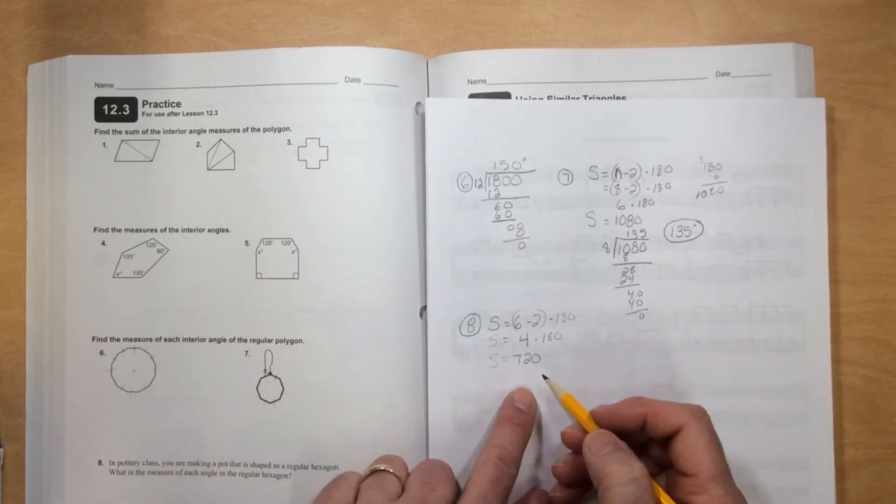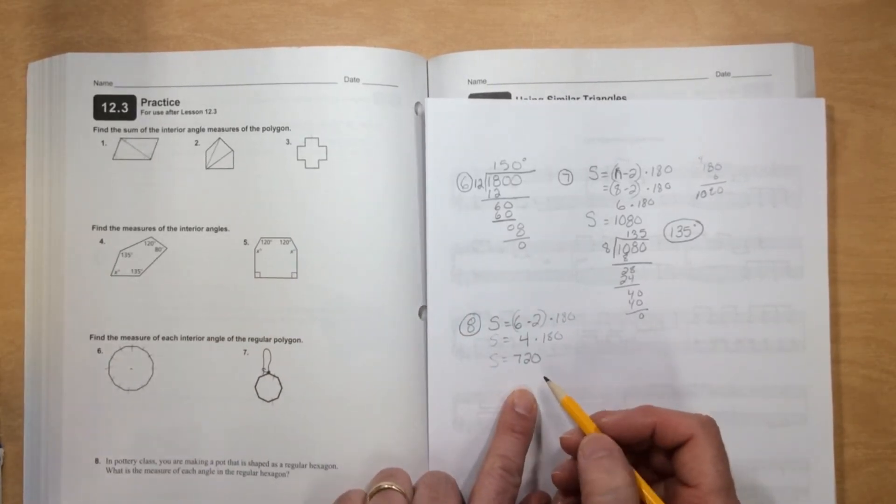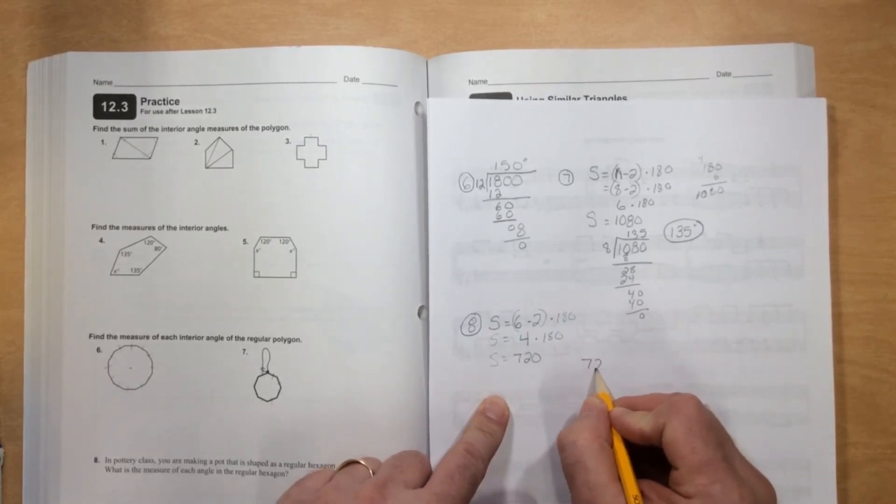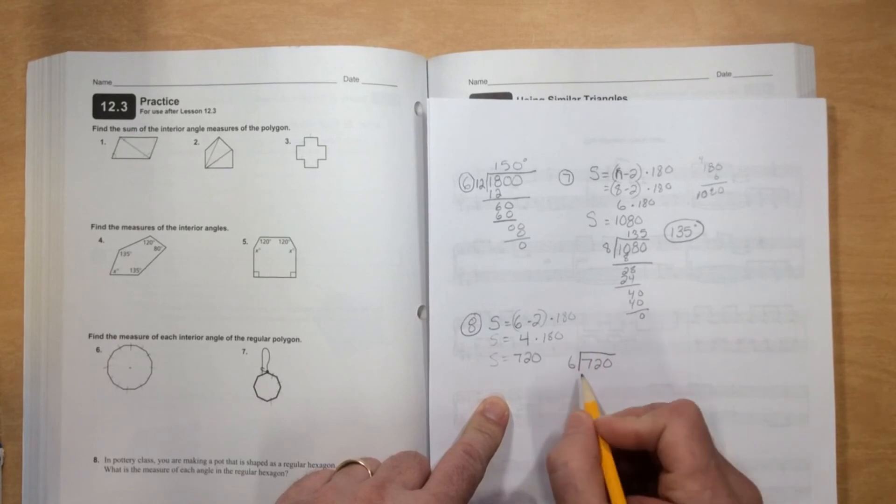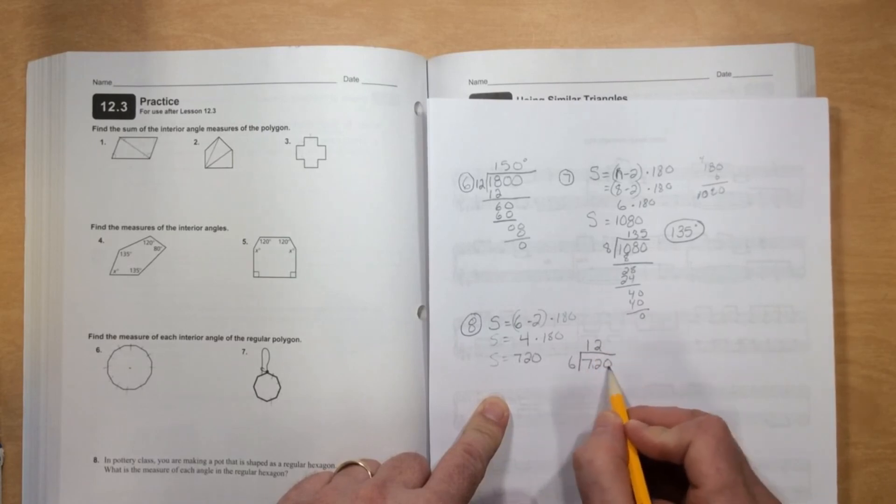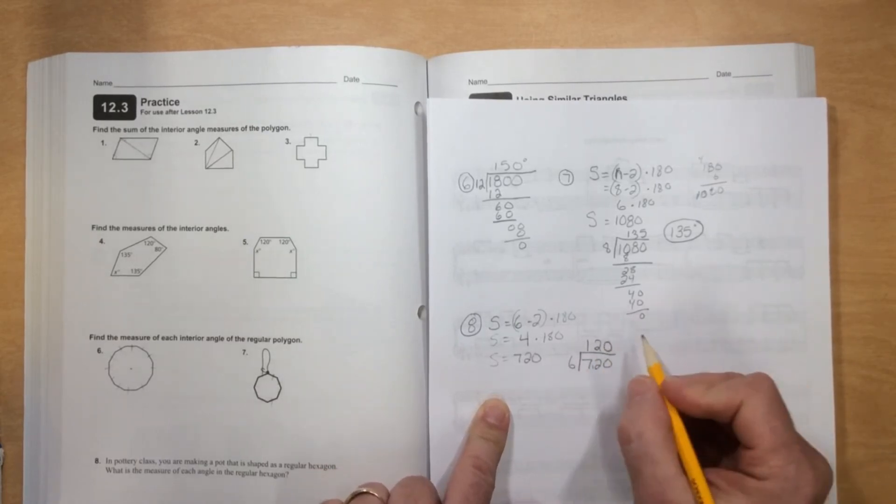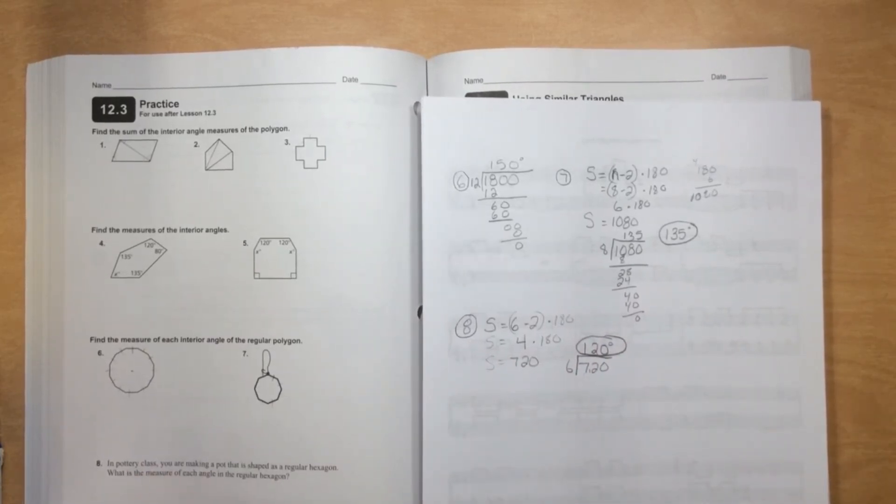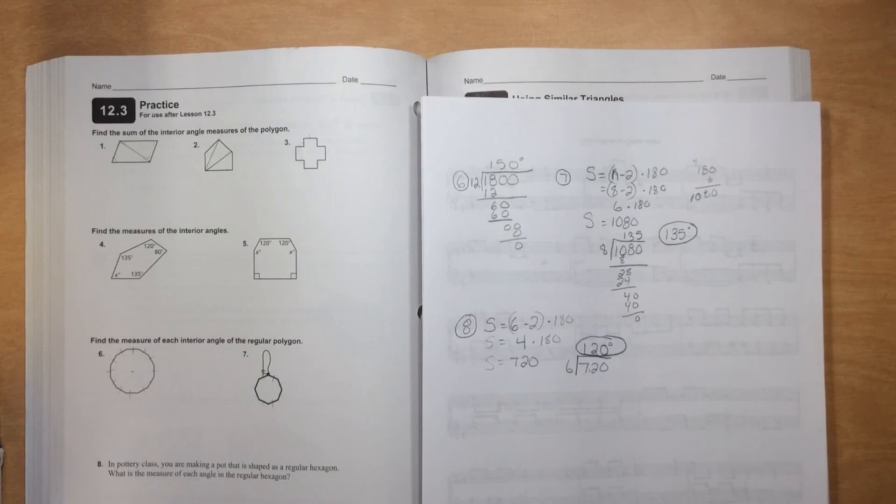All right, so 720 degrees. And now we want to know each, so we have to divide by 6. 6 goes into 7 once with 1 left over, 6 goes into 12 twice, 6 goes into 0 zero times. So 120 degrees for each of the angles in the hexagon. Hope that helped. Leave any questions in the comment section. See ya.